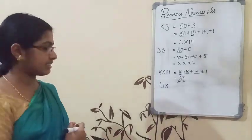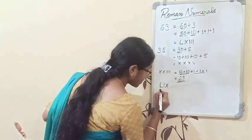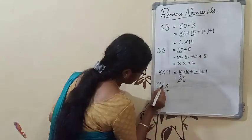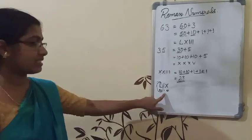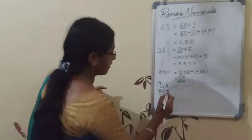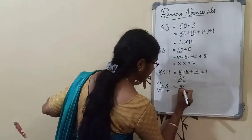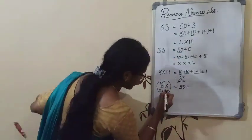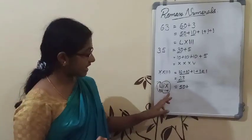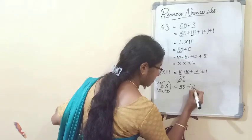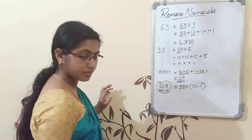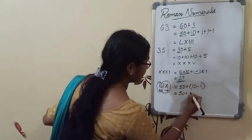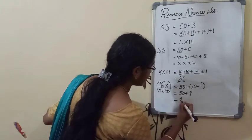One more question: convert LIX to a Hindu-Arabic number. L means fifty, I means one, X means ten. Here, fifty is on the left and is the greatest value, so fifty is added. But looking at I and X: one is less than ten, so we subtract: ten minus one equals nine. Therefore, fifty plus nine equals fifty-nine. LIX equals 59.